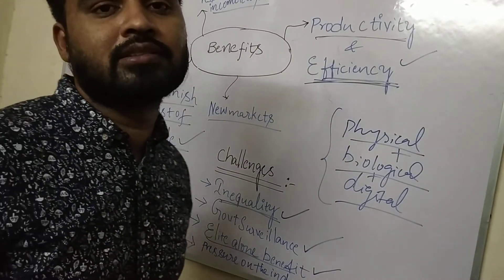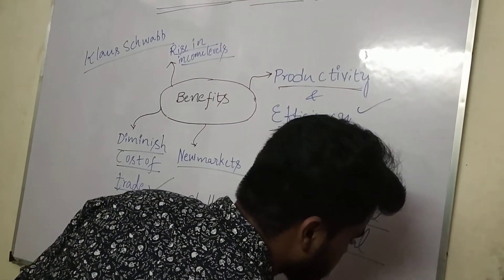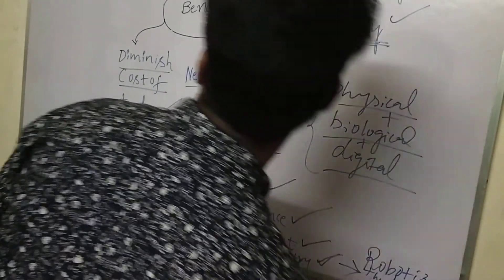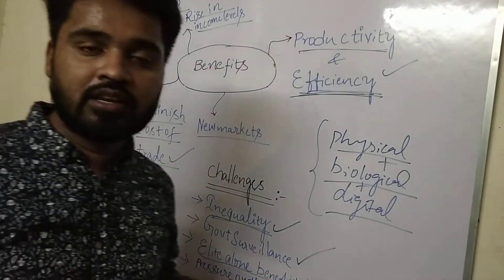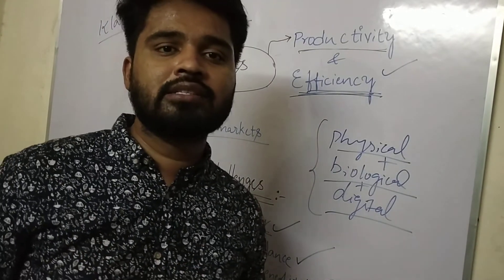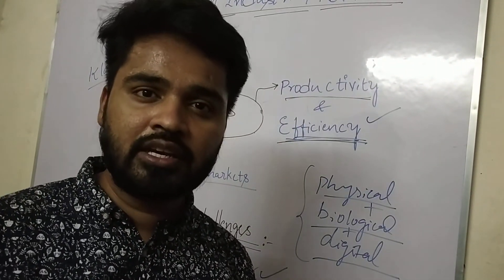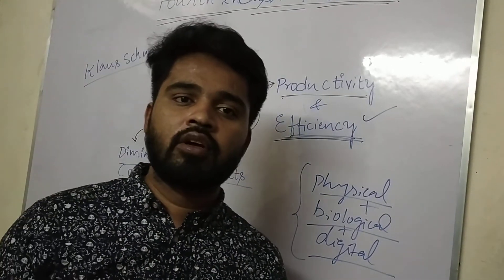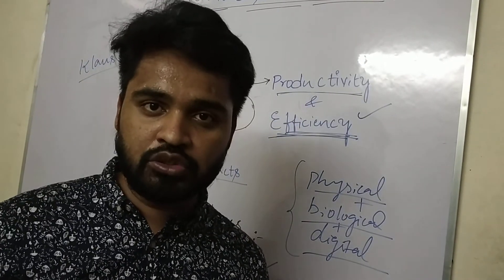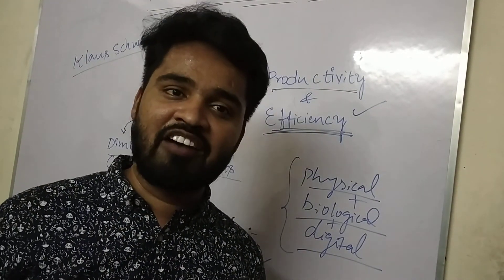The last challenge is that some economists apprehend that this Fourth Industrial Revolution would further robotize the workforce. These are all the benefits and challenges posed by the Fourth Industrial Revolution. Now it is up to governments, policymakers, civil society, and industry — all these stakeholders have to work in tandem to direct the Fourth Industrial Revolution according to our objectives and value system. Thank you, buddies, have an awesome day.